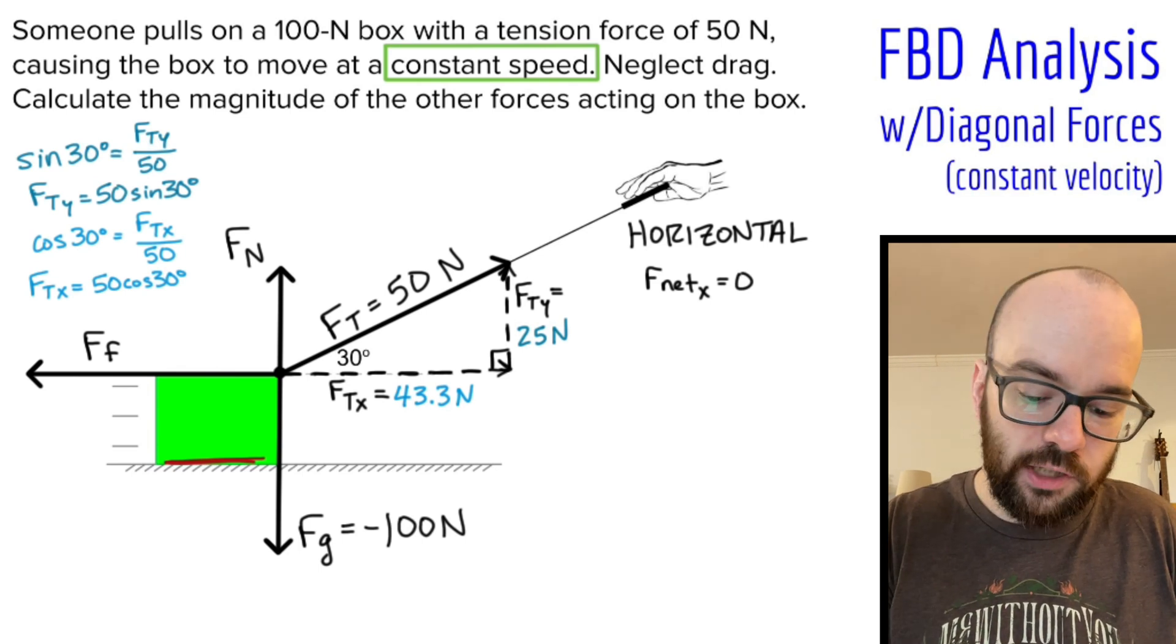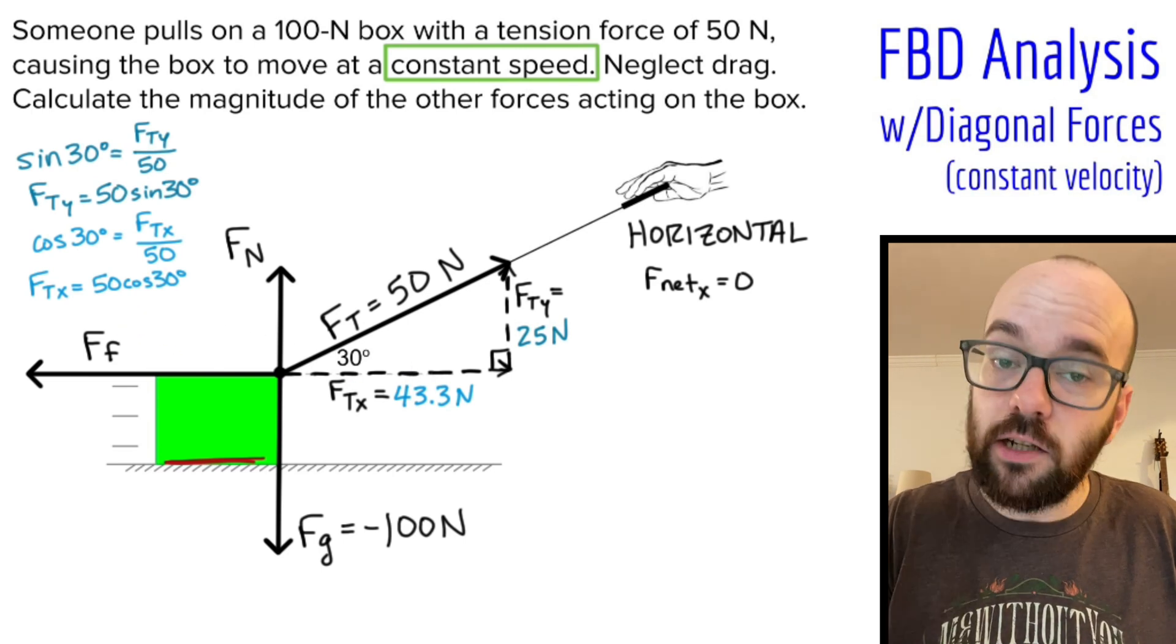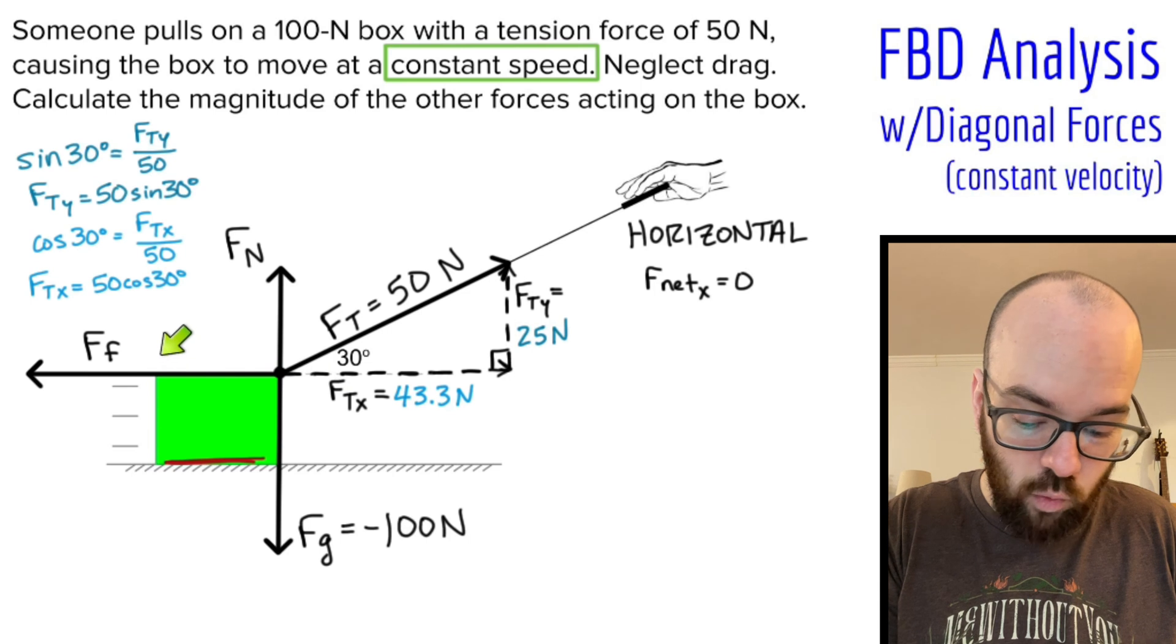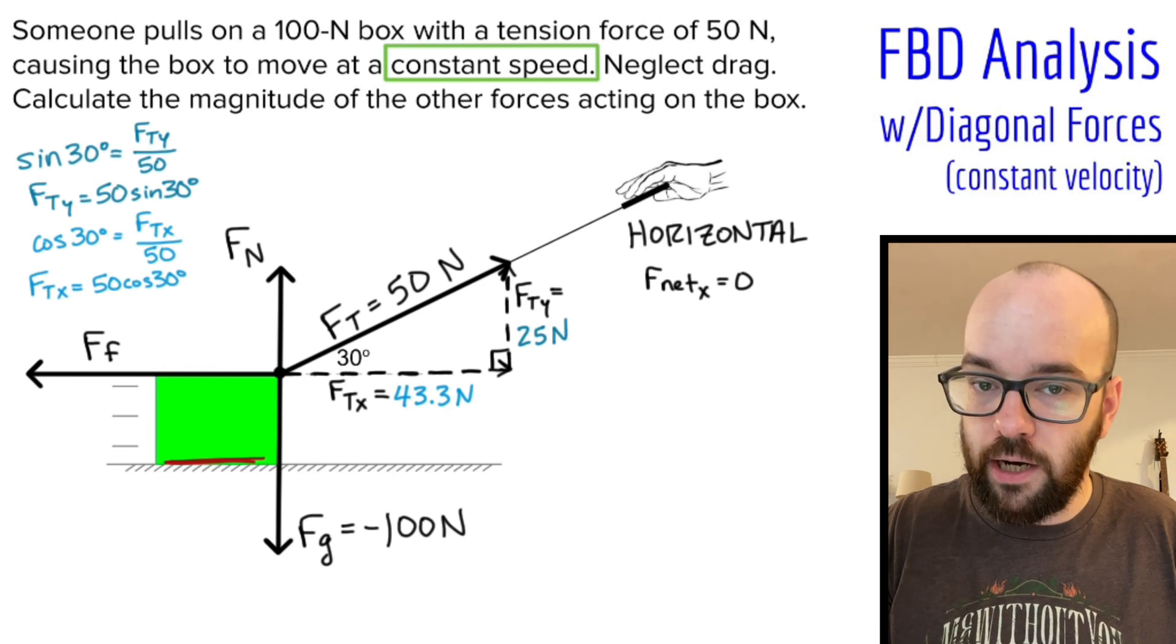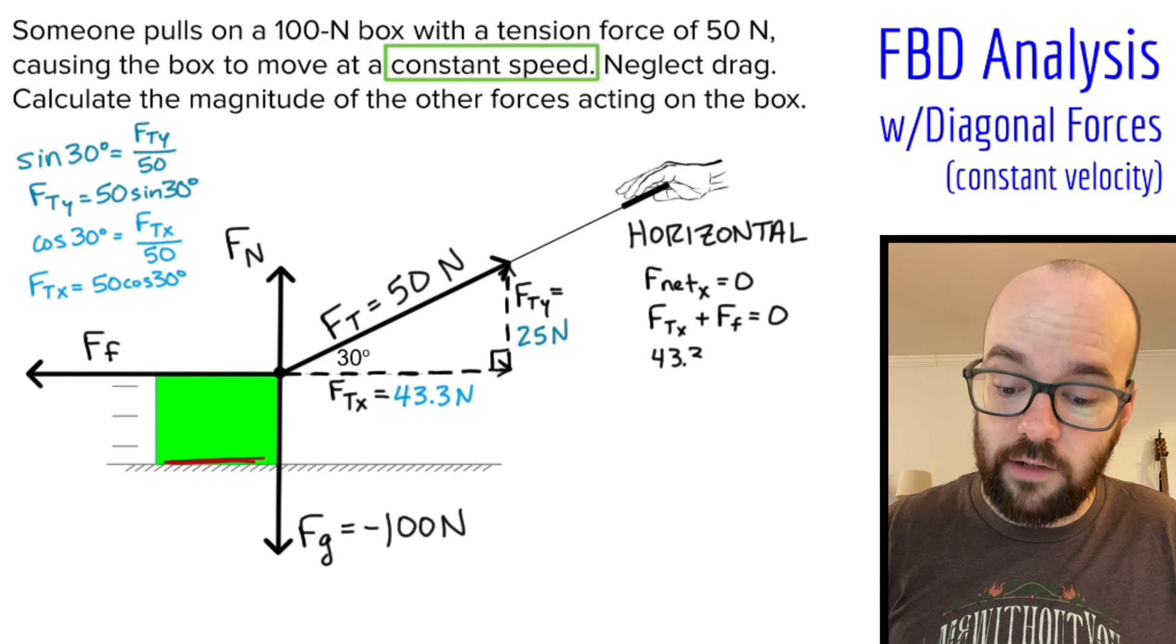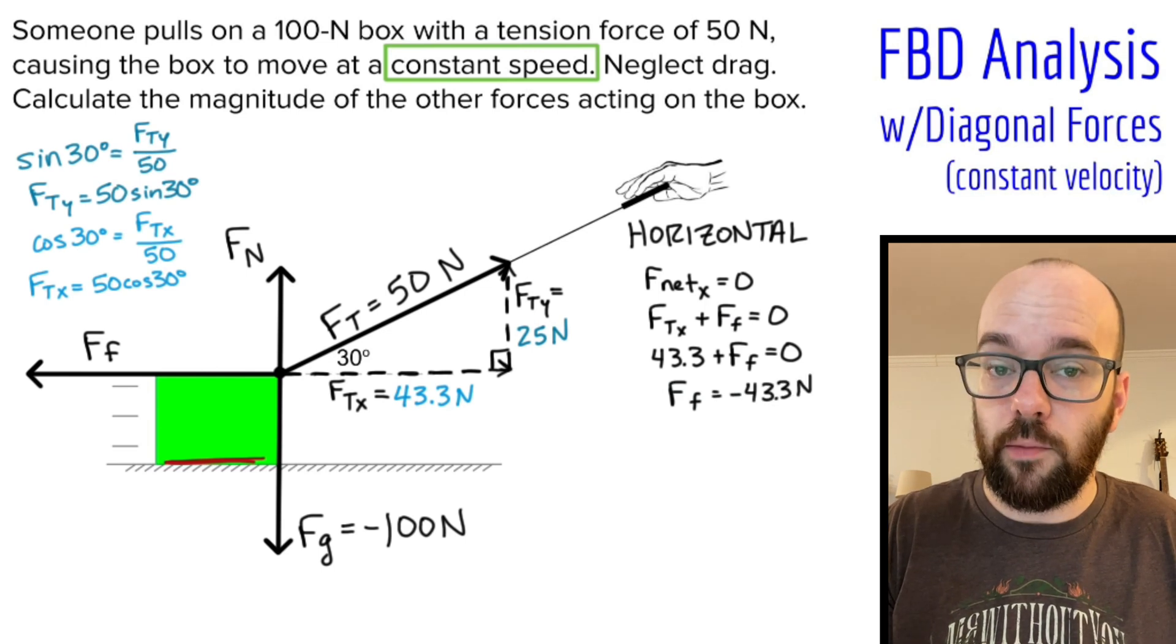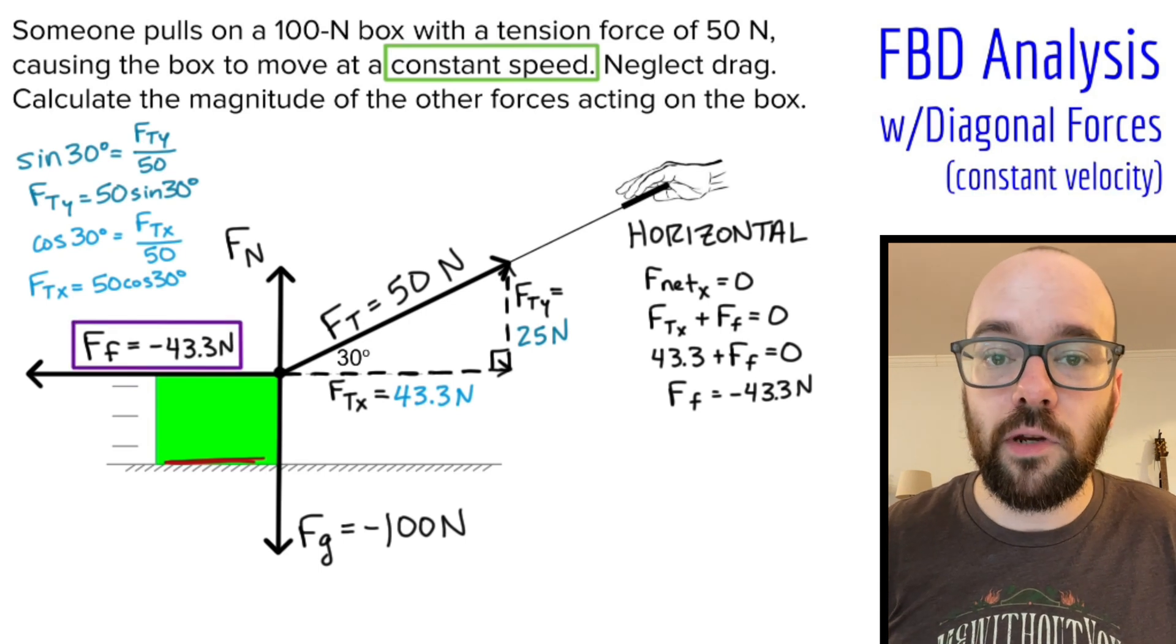So F net X is zero newtons, and that means that the horizontal forces should add up to be zero. What horizontal forces do I have? I have FTX, which is 43.3. I have force of friction, which I don't know, and that's the only horizontal forces I have. So those two forces add up to zero. I can write that out algebraically. I can say FTX plus force of friction equals zero. FTX is 43.3. I solve for force of friction, subtract 43.3 on either side, and I get force of friction equals negative 43.3 newtons. So I can label that. Force of friction is negative 43.3 newtons.